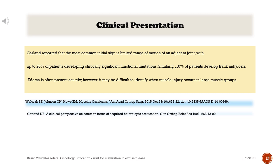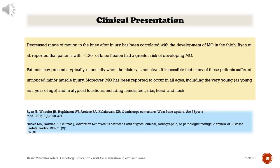Edema is often present acutely; however, it may be difficult to identify when muscle injury occurs in large muscle groups. Decreased range of motion to the knee after injury has been correlated with the development of myositis ossificans in the thigh. Ryan et al. reported that patients with below 120 degrees of knee flexion had a greater risk of developing myositis ossificans.